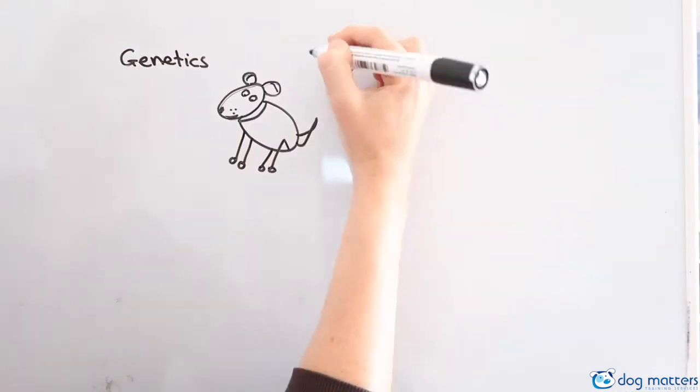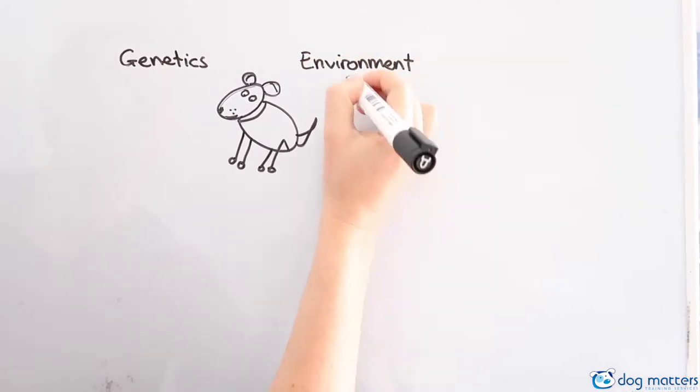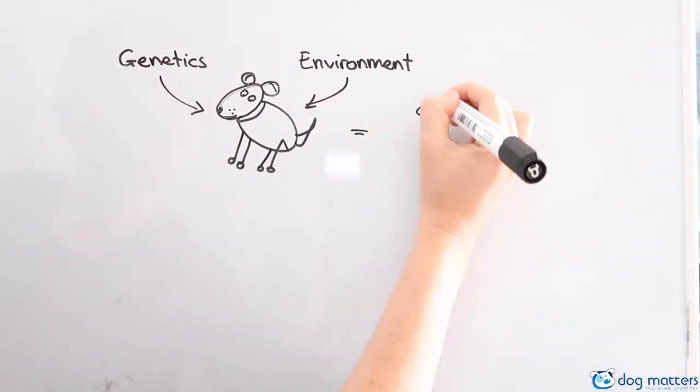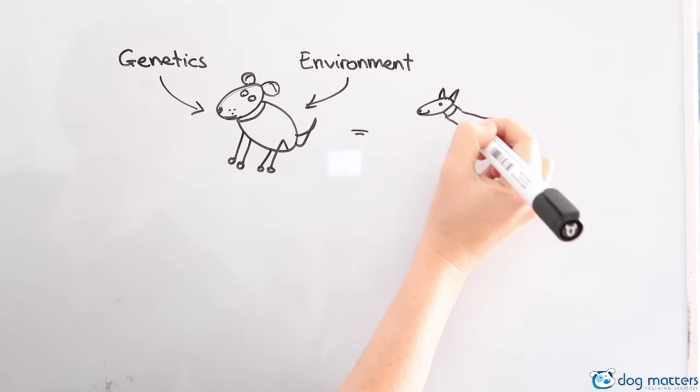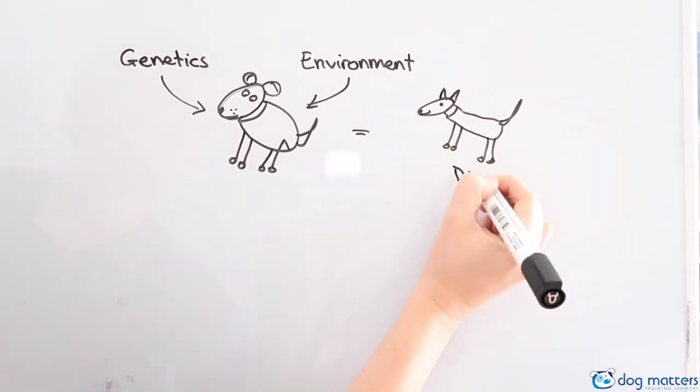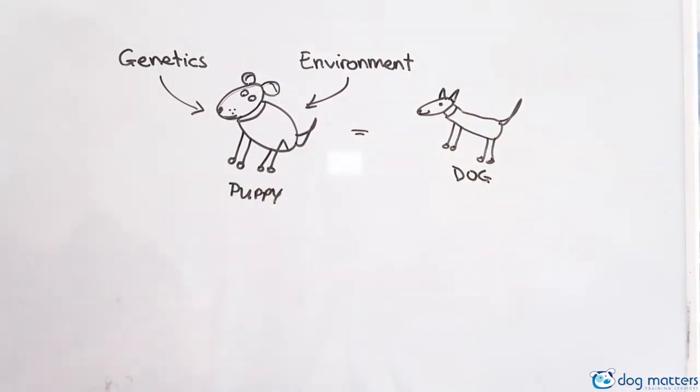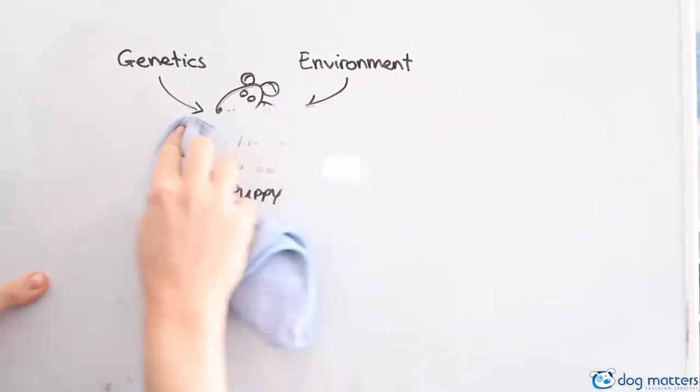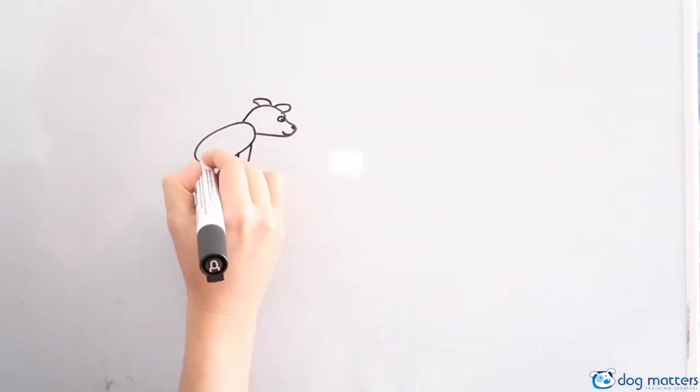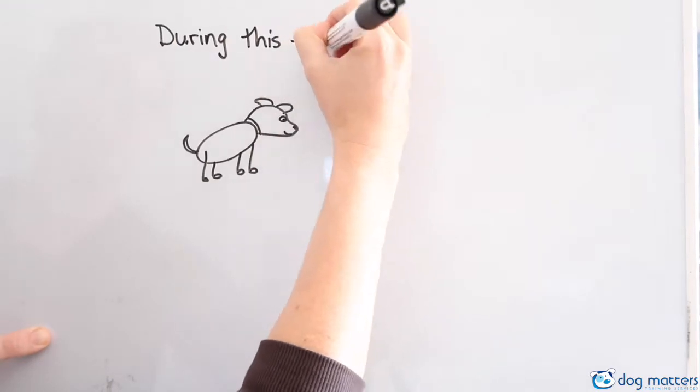Now the way a dog will turn out always depends on both genetics and the environment. So you always have these factors influencing your puppy. But with the environmental factors, we have some control over that, and that's where socialization comes into play.